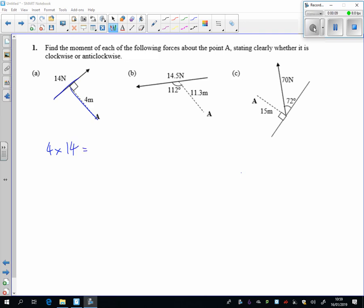14 times 4 is 56 newton metres, and that's going in a clockwise direction.